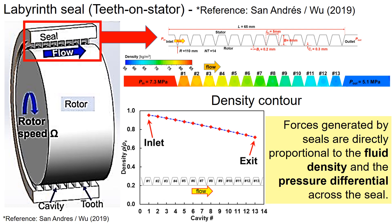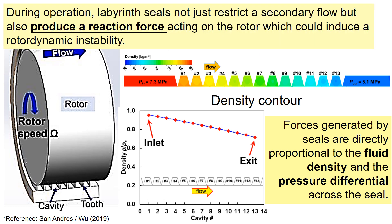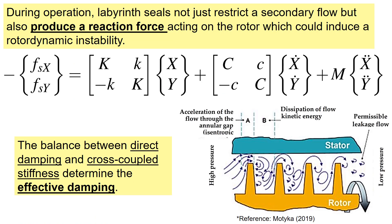It is important to note that forces exerted by the seals are directly proportional to the fluid density and the pressure differential across the seals. During operation, labyrinth seals not only restrict the secondary flow but also generate reaction forces on the rotor, which can induce rotor dynamic instability. Forces exerted on the rotor can be described in terms of direct stiffness, cross-coupled stiffness, direct damping, and cross-coupled damping.